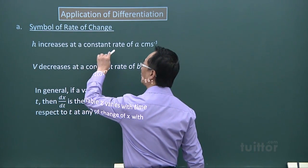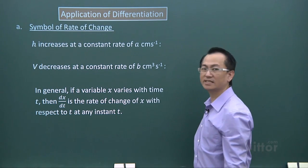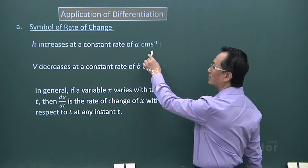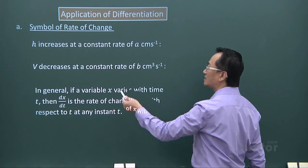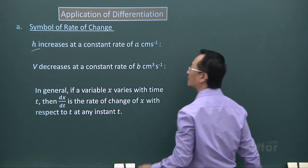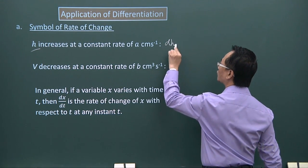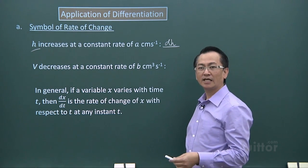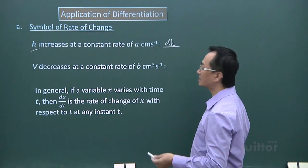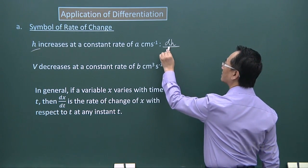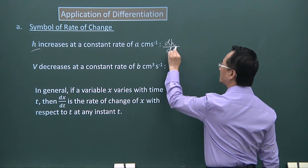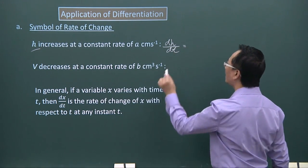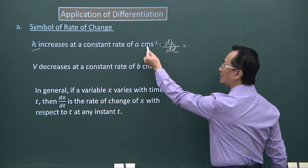If you have a phrase like h increases at a constant rate of a cm per second, the symbol will be dh over dt since h is mentioned first and rate of change is with the lapse of time. Since it is increasing, it will be a positive a cm per second.